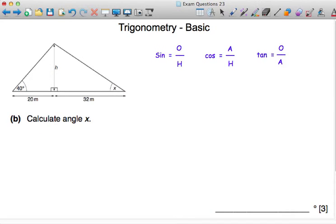Moving on to the second part of the question, we have to calculate angle x. But of course, now we know that h is equal to 16.78 meters. Now, which two sides do we know in relation to angle x? Well, the 16.78 is the opposite side of the triangle again, and the 32 meters is adjacent to angle x. So we're looking at opposite and adjacent again—still looking at tangent.